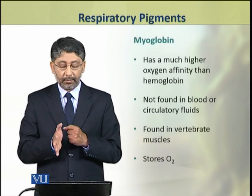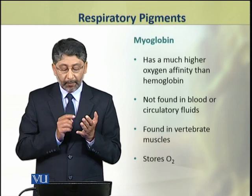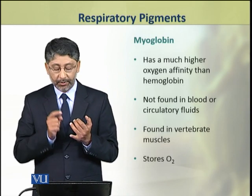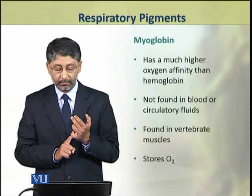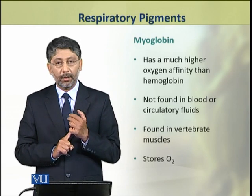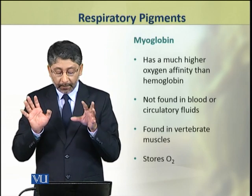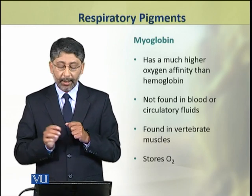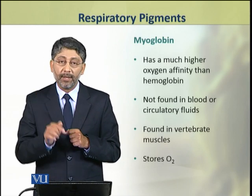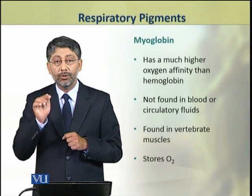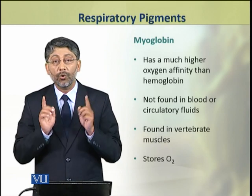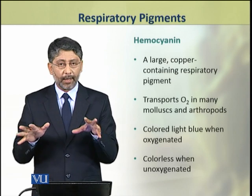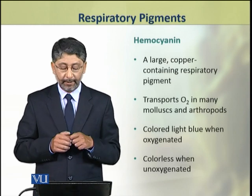The second respiratory pigment, myoglobin, has a much higher oxygen affinity than hemoglobin. It is not found in the blood or any circulatory fluids; it is found in vertebrate muscles and is used to store oxygen. These stores are used in times of necessity or need.